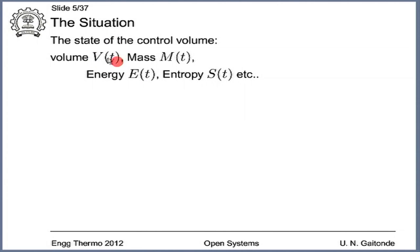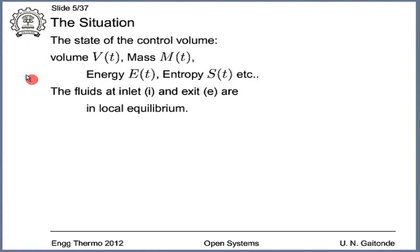Note that we are overloading the symbol V — it will be used for volume as well as for velocity. There is unlikely to be any confusion because velocities at the inlet and exit ports will carry subscripts I and E, whereas the volume of the control volume will have a subscript C.V. We will also assume that the fluid at the inlet and the fluid at the exit are in local equilibrium — meaning the state at each port can be uniquely determined.